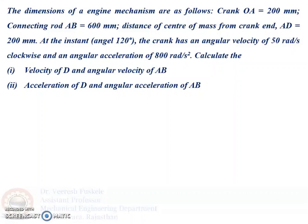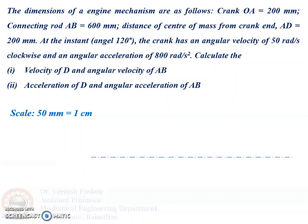To draw the configuration diagram, we will take up a scale. The scale we have taken here is 50 mm represented by 1 cm. To start drawing the configuration diagram, we draw a central line. On this central line, we take a point O at which the crank OA is hinged, and it will also be the center of rotation of the crank OA.